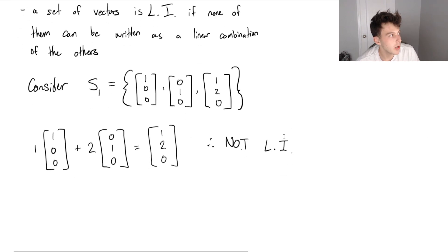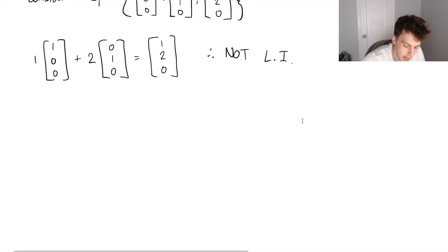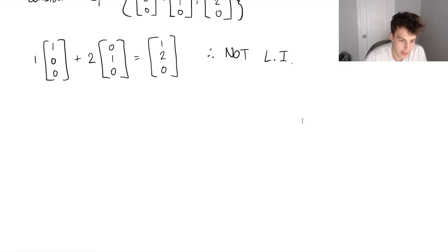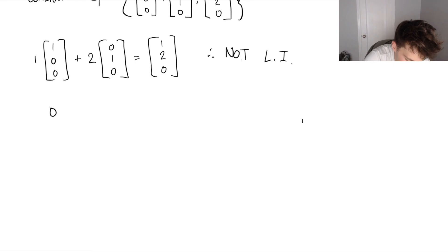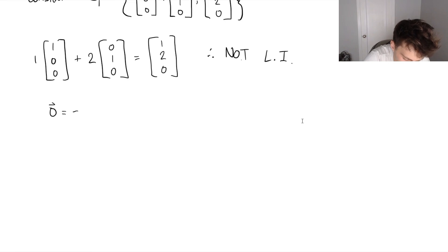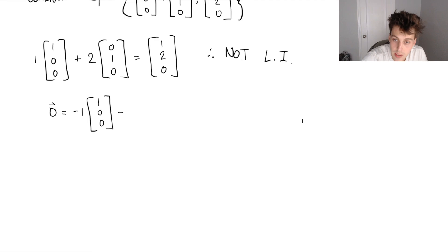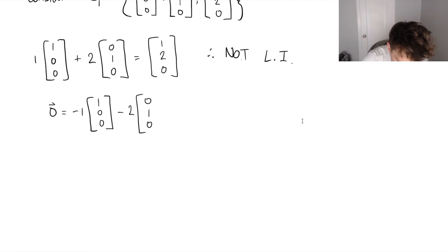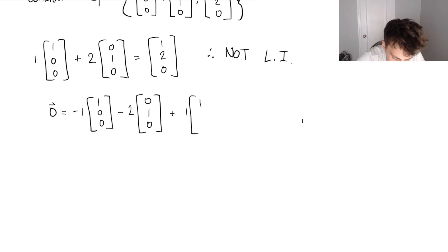What we're going to do is take this equation and rewrite it very slightly, so that we have all of the vectors on the right-hand side. The zero vector is going to be equal to: negative 1 times (1, 0, 0), minus 2 times (0, 1, 0), plus 1 times (1, 2, 0). Let's keep this equation in our back pocket.